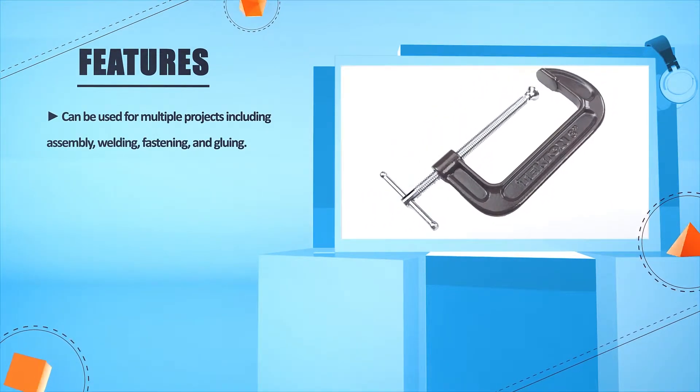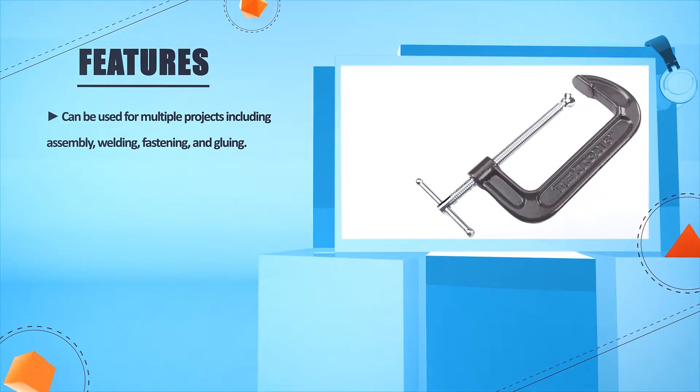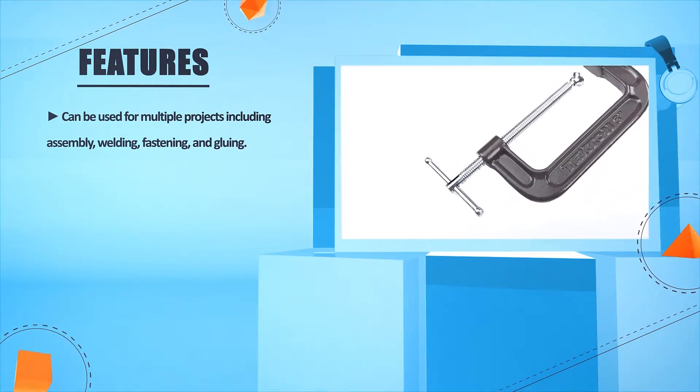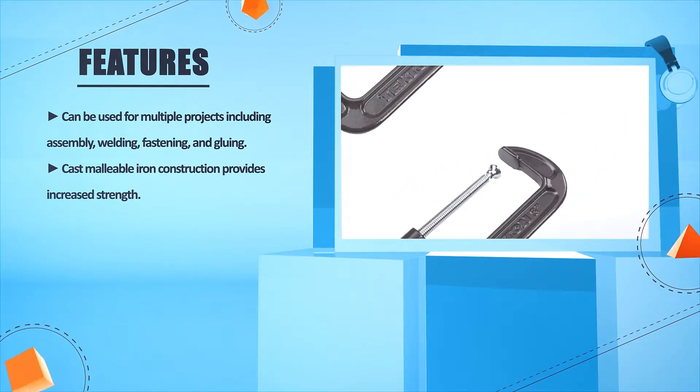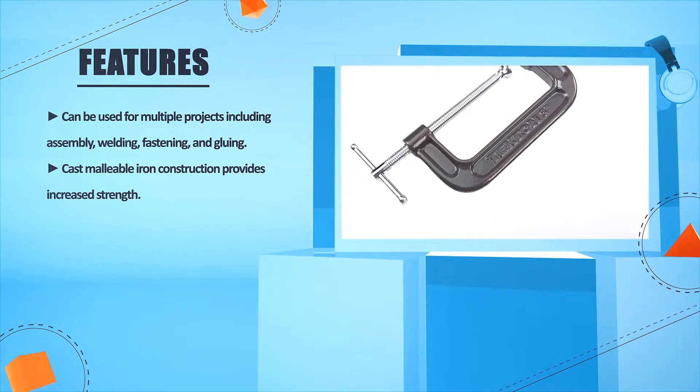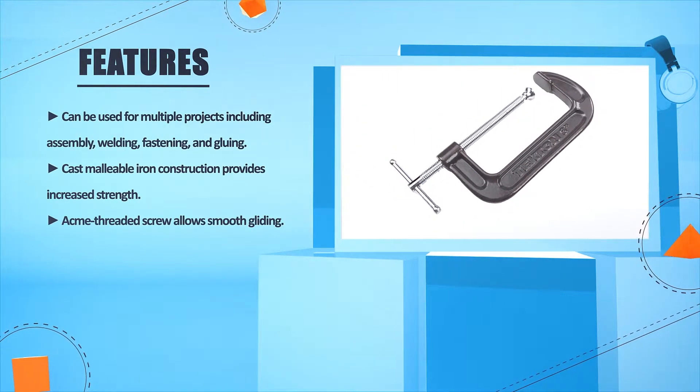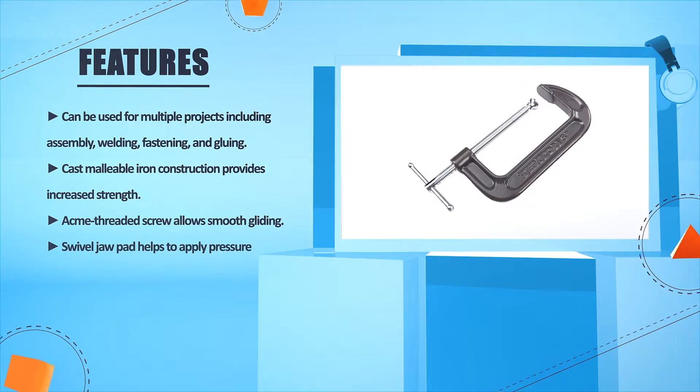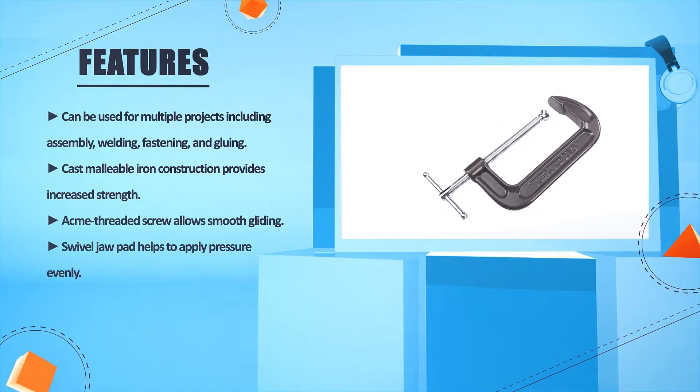Can be used for multiple projects including assembly, welding, fastening, and gluing. Cast malleable iron construction provides increased strength. Acme threaded screw allows smooth gliding. Swivel jaw pad helps to apply pressure evenly.